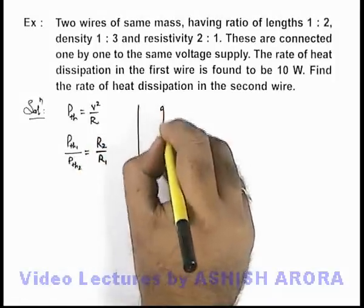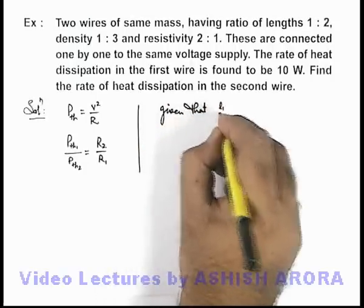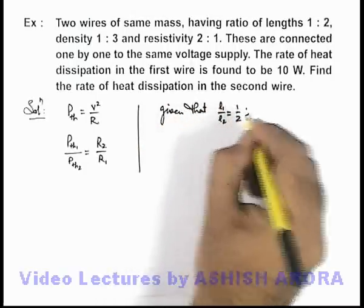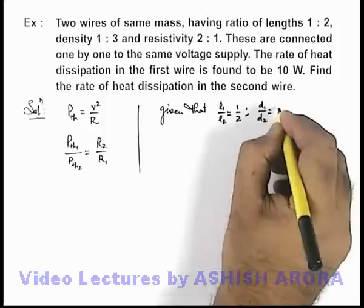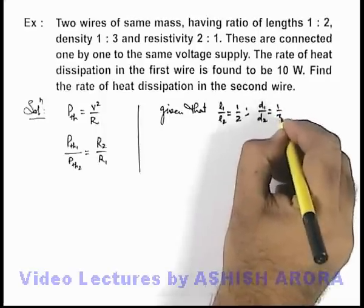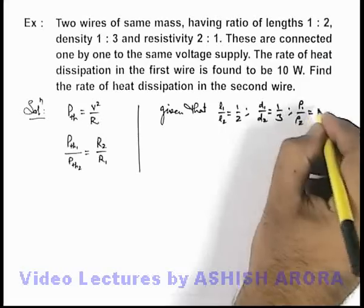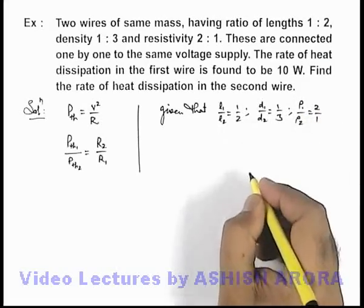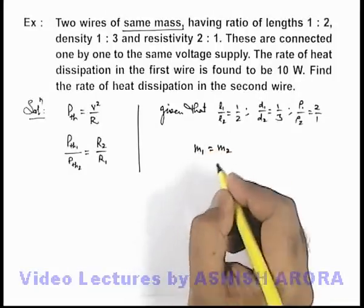Here we are given that the values of L1 by L2 is 1 by 2, ratio of density d1 by d2 is 1 by 3, and ratio of resistivity ρ1 by ρ2 is 2 by 1. We are given that these wires have same mass, so we can write m1 equals m2.